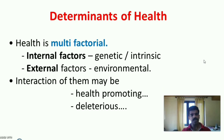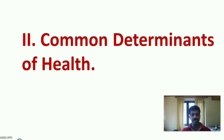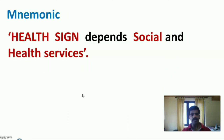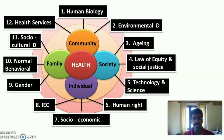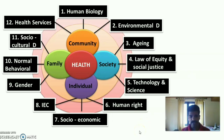In conclusion, we have discussed the determinants of health. Health is multifactorial, with many internal and external factors influencing it. There are 12 main factors summarized by the mnemonic HEALTH SIGN DEPENDS SOCIAL AND HEALTH SERVICES: H for human biology, E for environment, A for aging, L for law of equity and social justice, T for technology and science, H for human right, S for socio-economic determinants, I for IEC, G for gender, N for normal behavior, SOCIAL for socio-cultural practices, and HEALTH SERVICES for health services.